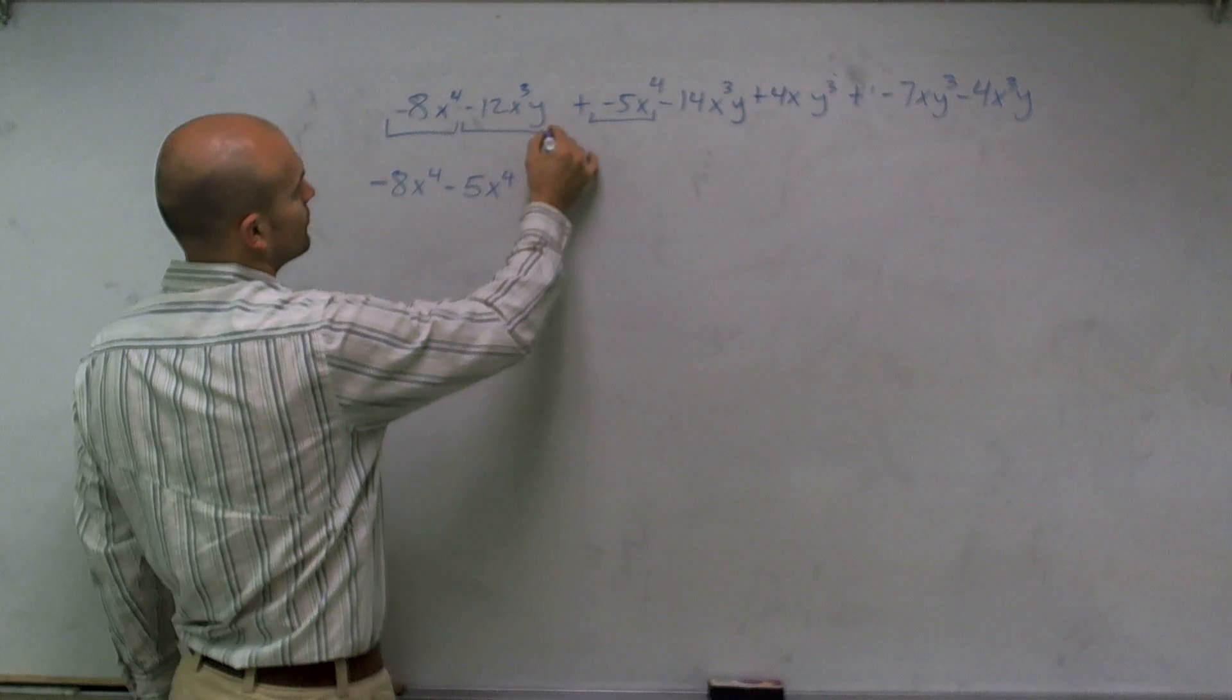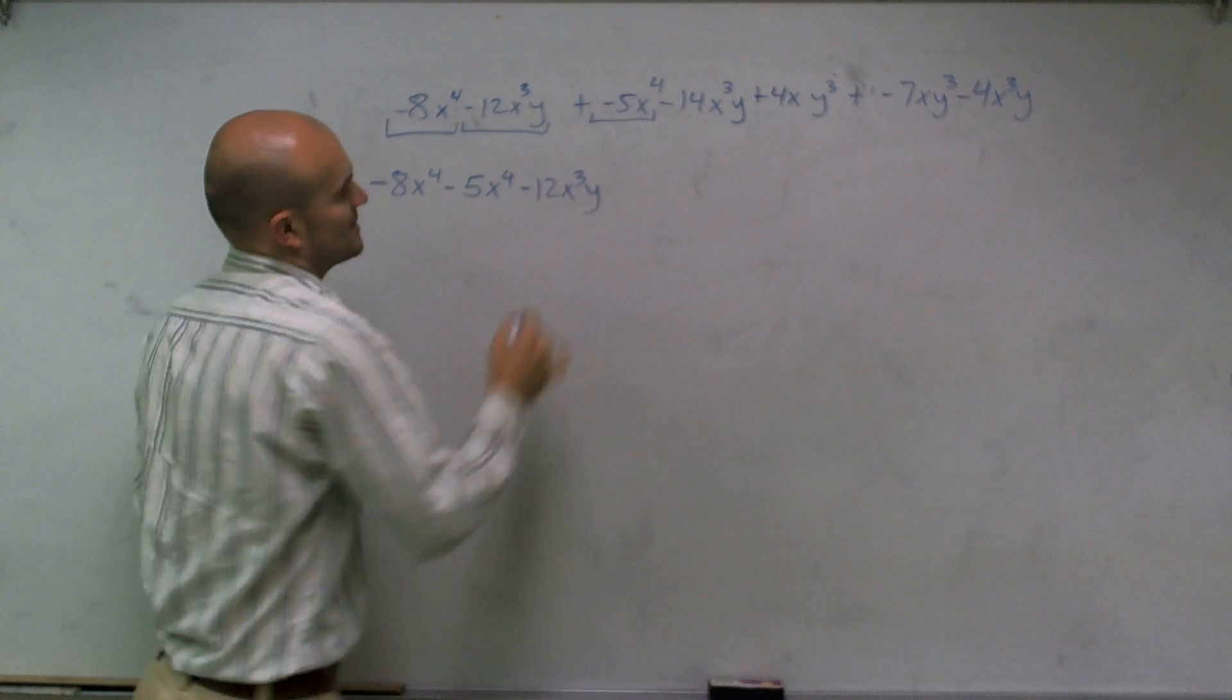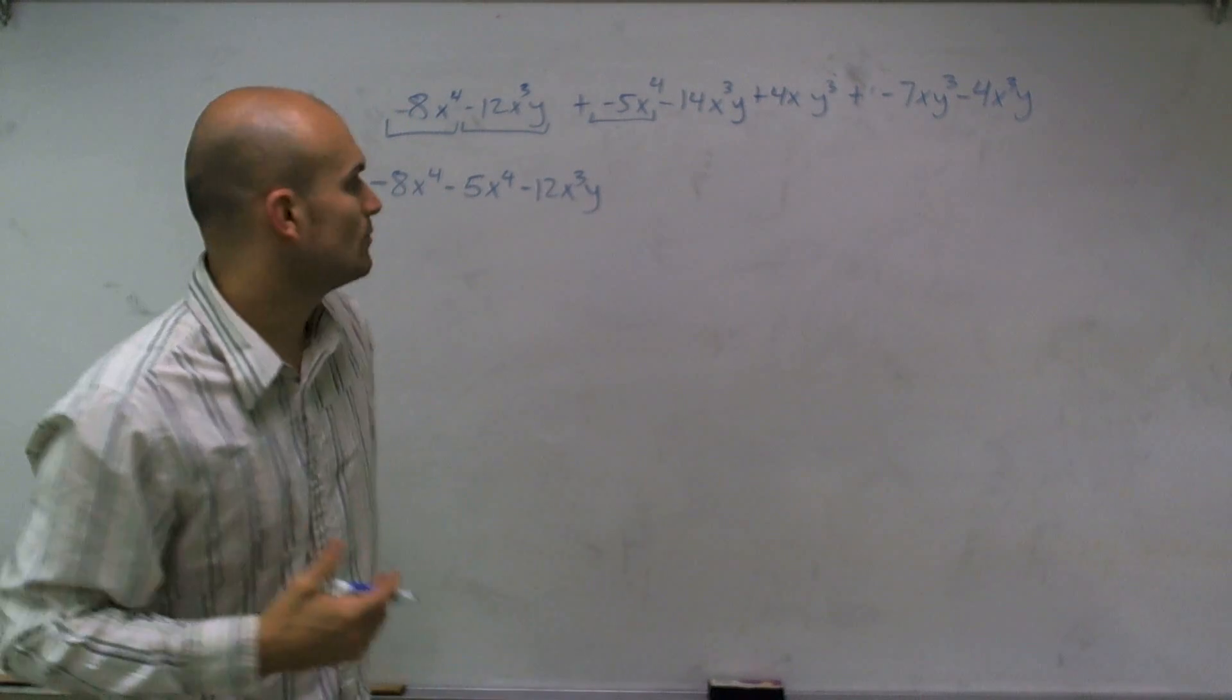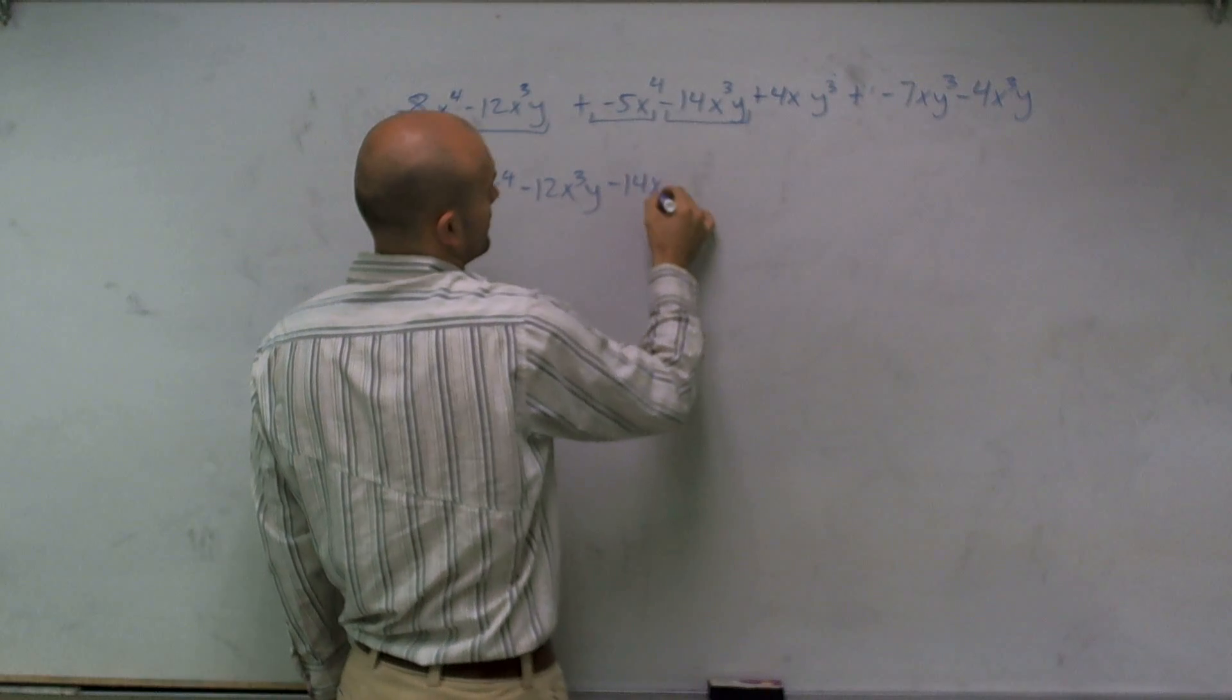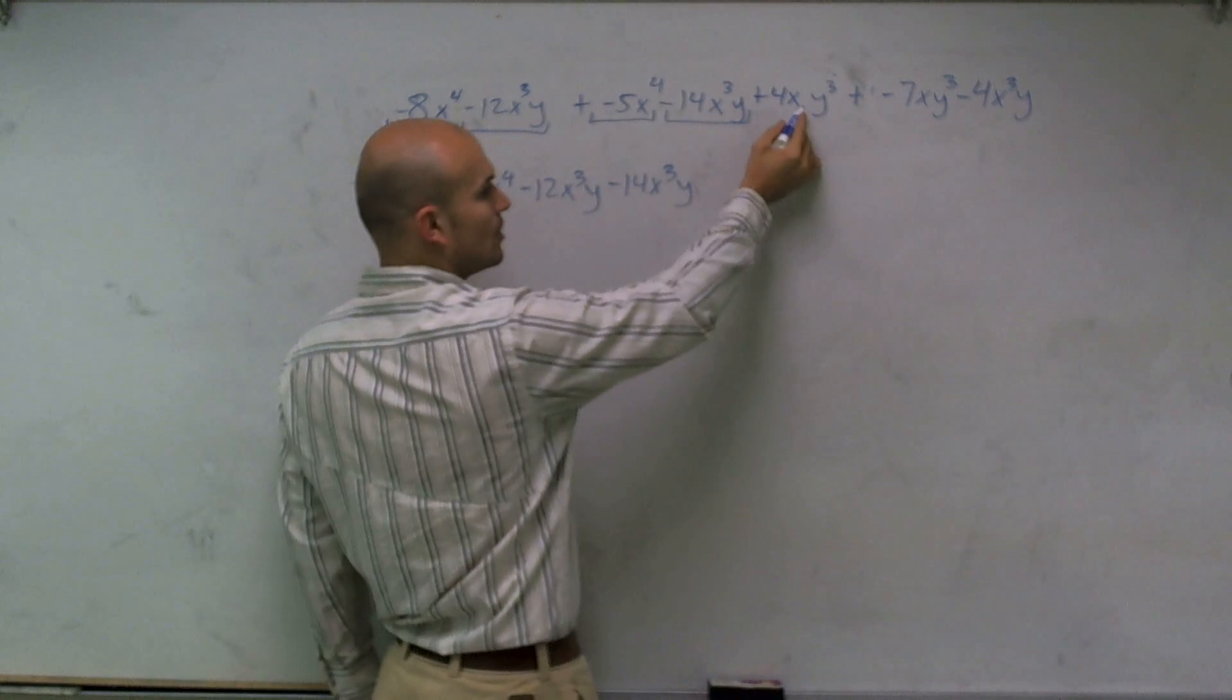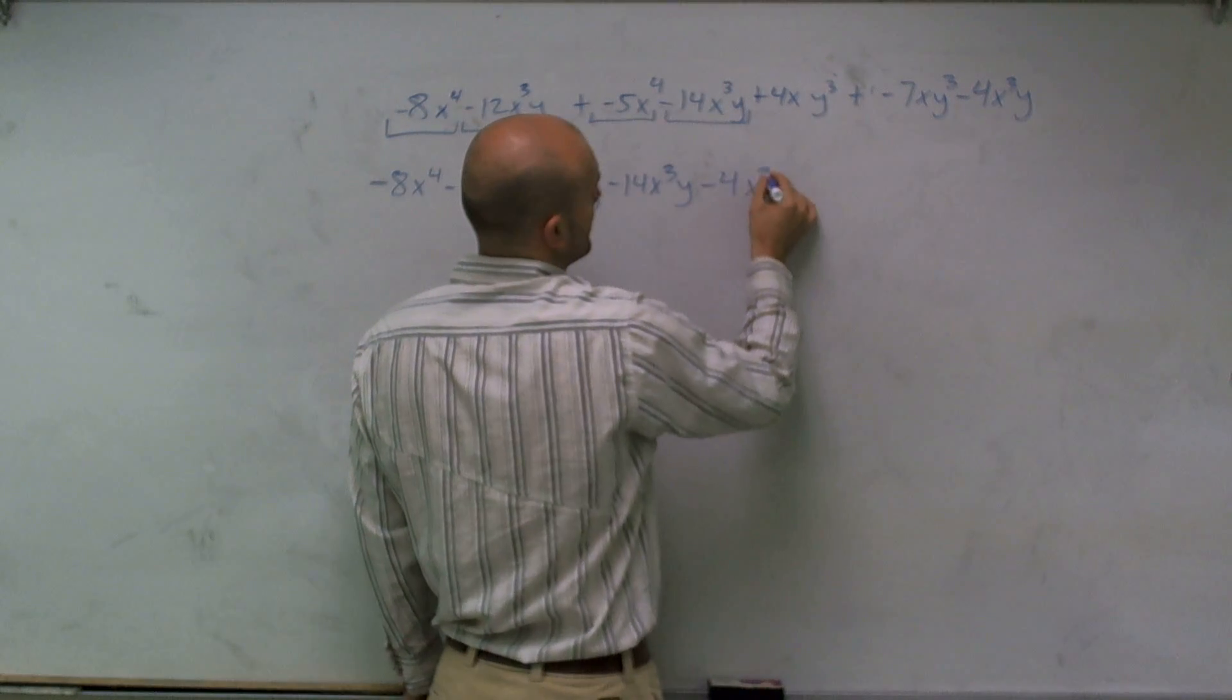Then I look at my next term. Well, that's going to be a negative 12x cubed y. So now I need to look at what are all the terms that have x cubed y. So I have a negative 14x cubed y. And that's not, that's close, but that's an xy cubed. And then I have a negative 4x cubed y.